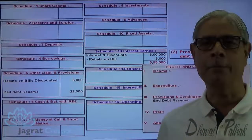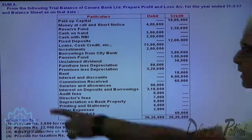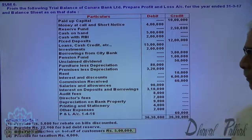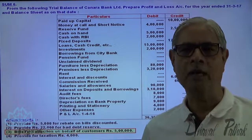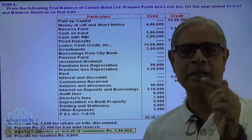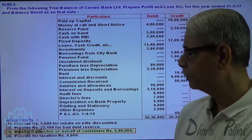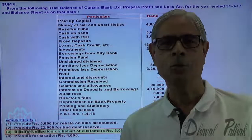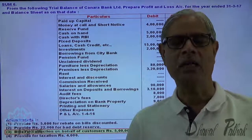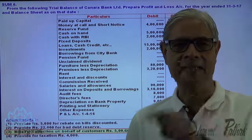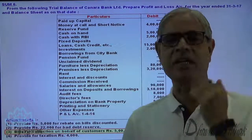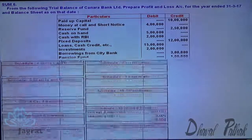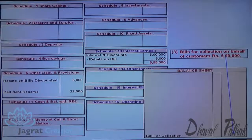The third adjustment: bills for collection on behalf of customer, file X. This is an asset as well as a liability, so it is reported as a footnote at the foot of the balance sheet. It is neither totalled in the assets nor in the liabilities, because these bills for collection are on behalf of the customer — we are obliged to pay on behalf of the customer and we have the right to recover the amount from the customer. So it will not be reported in the mainstream of assets or liabilities. It will appear as the last item in the balance sheet but will not be considered in the total. That is an important point to be understood.